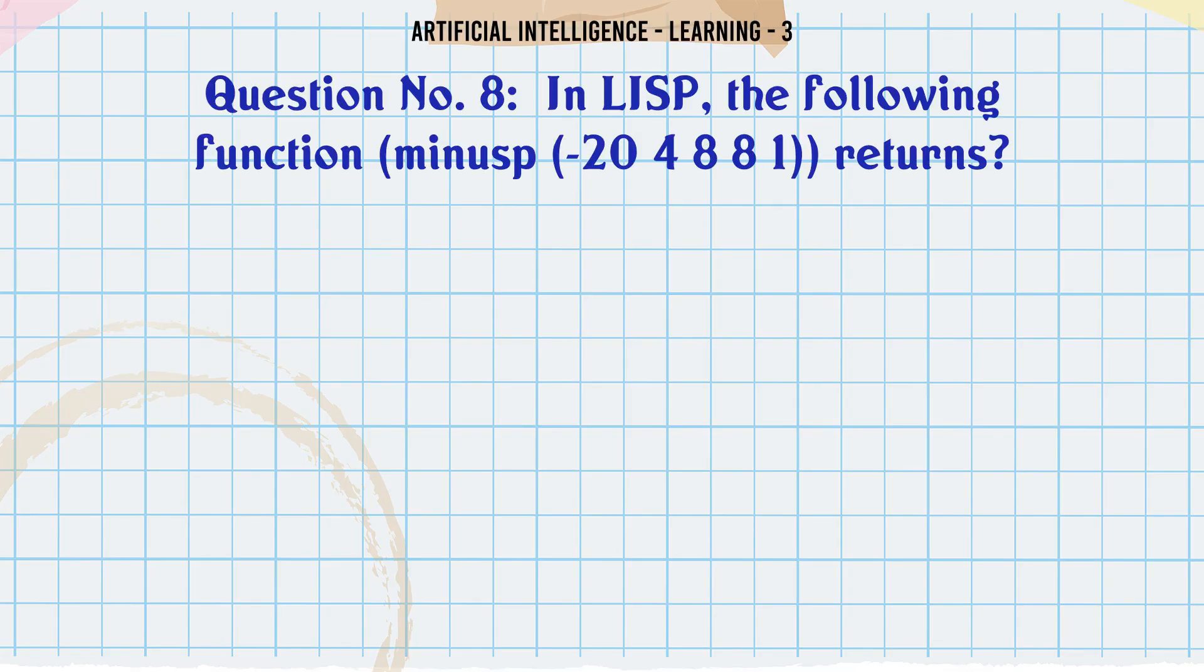In LISP, the following function minusp -24881 returns: Option A: T. Option B: F. Option C: NIL. Option D: 20. The correct answer is T.